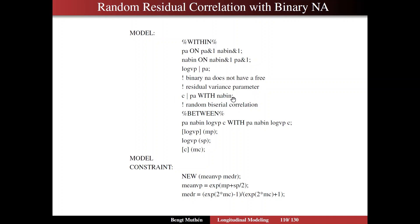Here we have the correlation between PA and NABIN — that's like a correlation between a continuous and a binary underlying variable, which is called a biserial correlation. So it's a random biserial correlation. It's actually the Fisher-Z version of that, but for small values it's essentially the regular correlation. Then you have the covariance system between all these effects — 1, 2, 3, 4 — and we label the means, variances, and means of that correlation. In model constraint, we can compute the mean or median of the variance, and we have the median of the correlation in that expression we saw earlier.